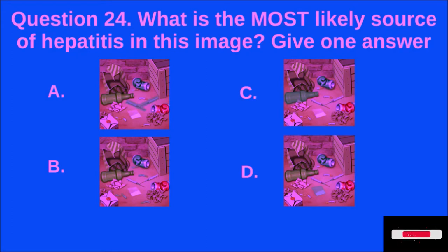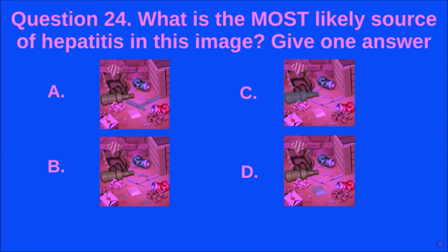Question 24: What is the most likely source of hepatitis in this image? Give one answer. A, B, C, D. A is the correct answer.